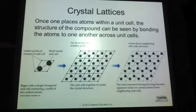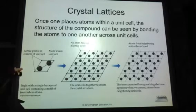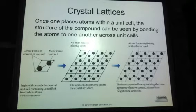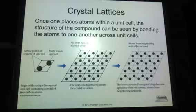Once one places atoms within a unit cell, the structure of the compound can be seen by bonding the atoms across those unit cells. The lattice by itself doesn't define a crystal structure. To generate a crystal structure, we have to associate an atom or a group of atoms at each lattice point. In most crystals, the atoms are not exactly coincident with the lattice points — instead, a group of atoms, also called a motif, is associated with each lattice point.